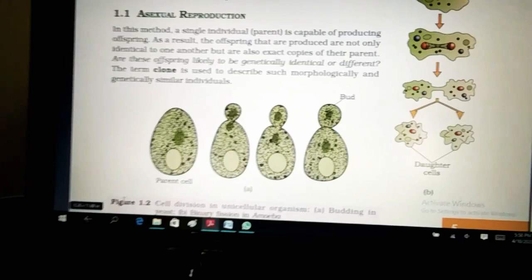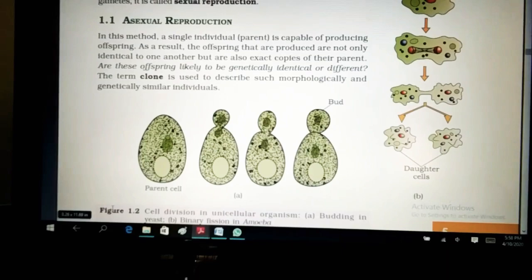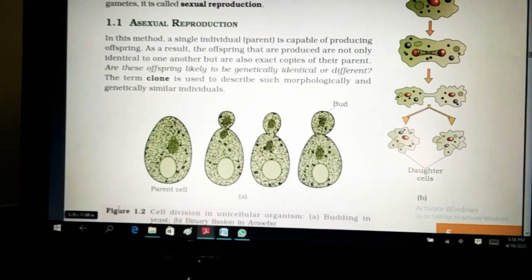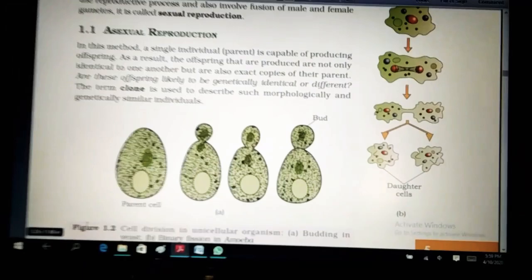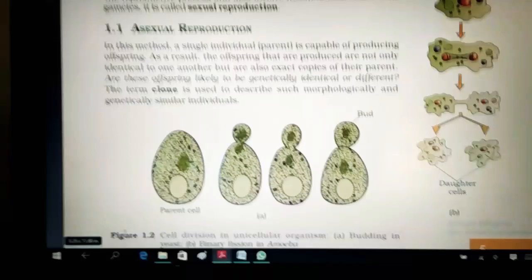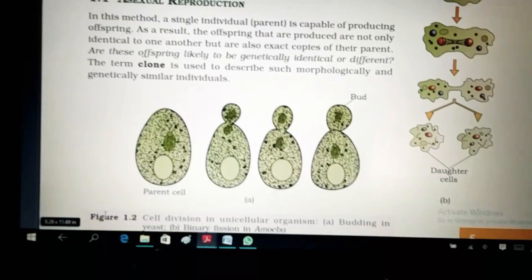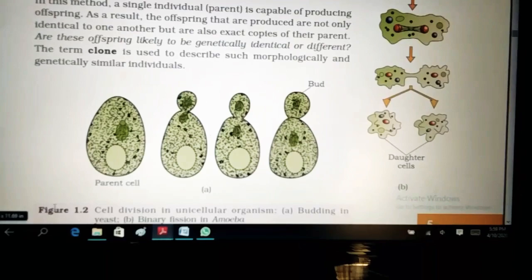In this method, a single individual parent is capable of producing offsprings. As a result, the offsprings that are produced are not only identical to one another but are also exact copies of their parents. Are these offsprings likely to be genetically identical or not? The term clone is used to refer such morphologically and genetically similar individuals. Here they are saying asexual reproduction is the reproduction of the offsprings which is done only by a single parent. And the offsprings, they are produced not only morphologically, that means the external appearance, shape, size, color or maybe there are spikes or some rough structures on the surface, but genetically.